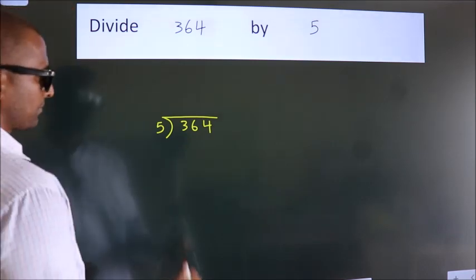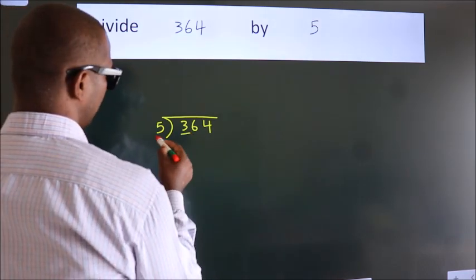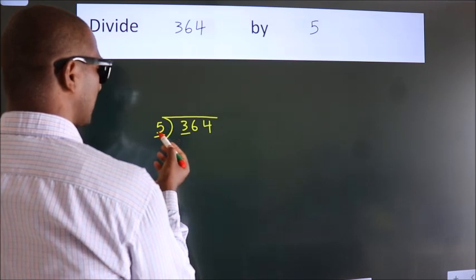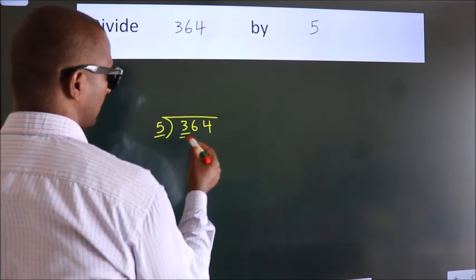Next, here we have 3. Here 5. 3 is smaller than 5, so we should take 2 numbers.